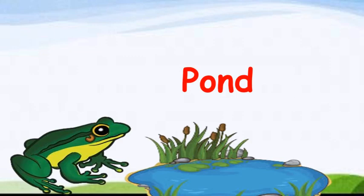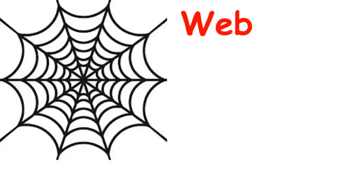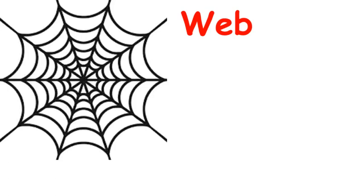What is this? This is a web. You must have found it in an old house or in a room not used for a long time. This is known as a web. You can read the word here written in red. And who stays in a web, who makes a web? Spider. Spiders make a web and their home is also a web.